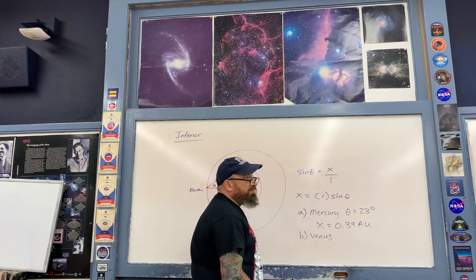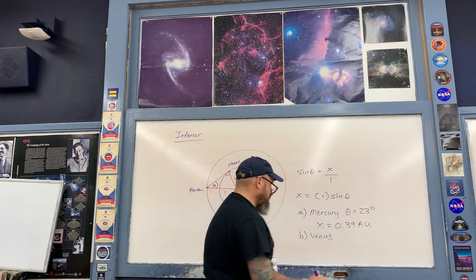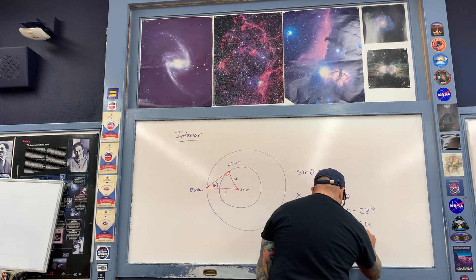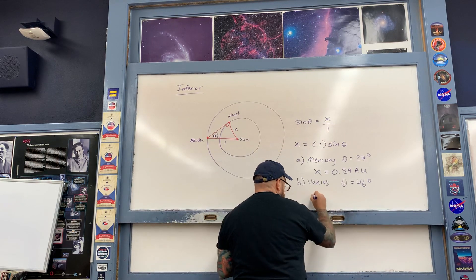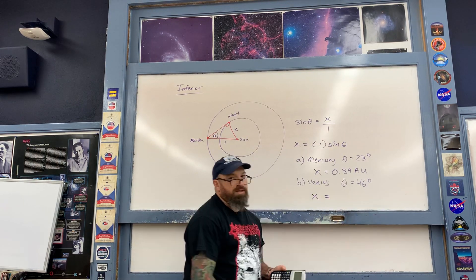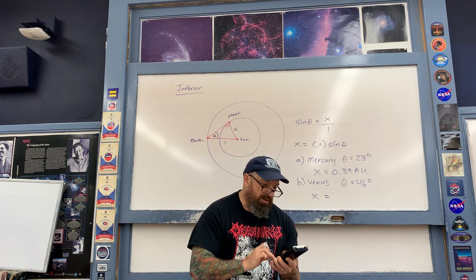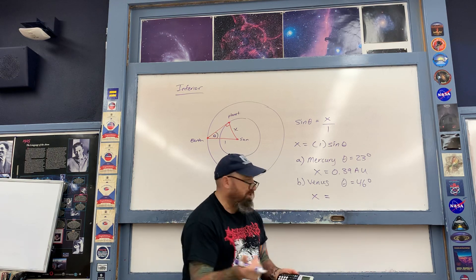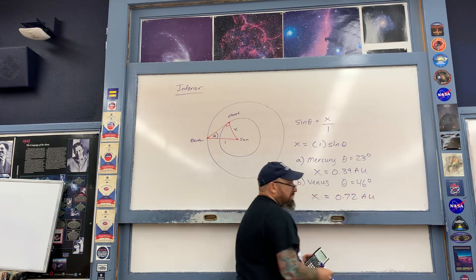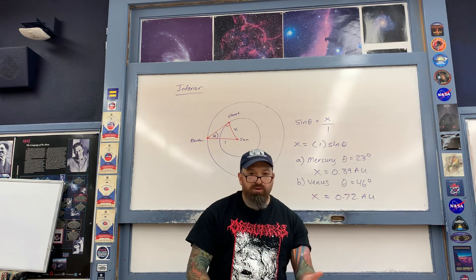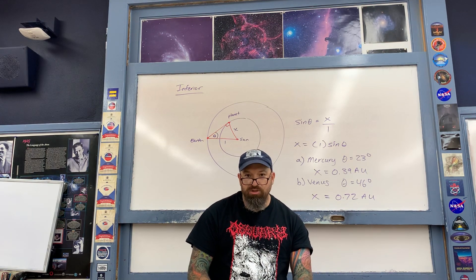Venus is further from the Sun, so it has a greater greatest elongation angle — in this case it's 46 degrees. I calculate the sine of 46 degrees, and that gives the distance Venus is from the Sun. The sine of 46 degrees works out to about 0.72 AU. These examples are basic illustrations of the mathematics associated with Copernicus.